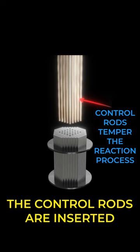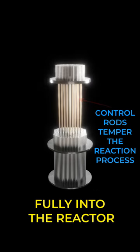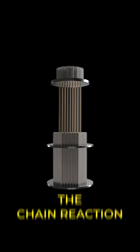To shut down a reactor, the control rods are inserted fully into the reactor, which can cease the chain reaction.